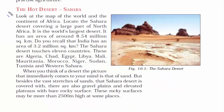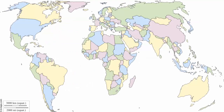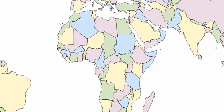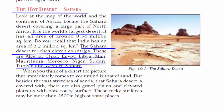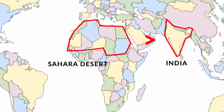The first topic is the Sahara Desert. It is the world's largest desert. The Sahara Desert touches 11 countries — Algeria, Chad, Egypt, Libya, Mali, Mauritania, Morocco, Niger, Sudan, Tunisia and Western Sahara. The total area of the Sahara Desert is more than the total area of India. That's how big it is.